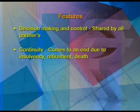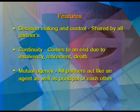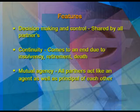The fifth feature is continuity. The business comes to an end due to the insolvency, retirement, or death of any partner. However, a new and fresh agreement can be made between the remaining partners. The sixth feature is mutual agency — all partners act as both agent and principal of each other, as written in the agreement.